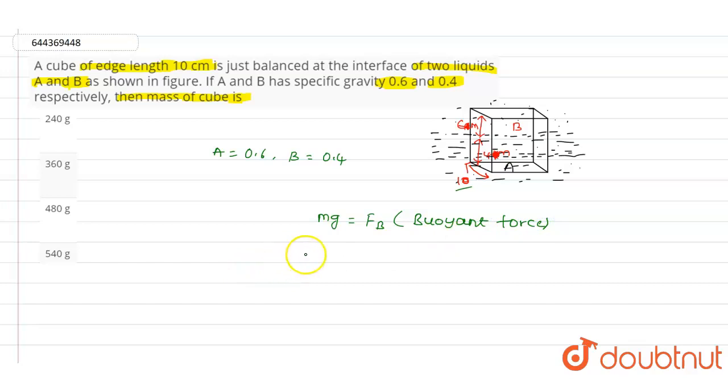So mg will be equals to V1·ρ1·g plus V2·ρ2·g. As we know, ρ1 value is equals to 600 kg per meter cube and ρ2 value is equals to 400 kg per meter cube. This is not mentioned in the question due to some technical error. So m value will be equals to V1·ρ1 plus V2·ρ2.